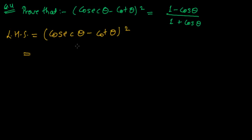Let me tell you a number one trick in this entire trigonometric identity chapter: convert all the other trigonometric values into sine and cosine form. Change cosec theta into sine, change cot into sine and cosine. Then solve. Every time, try to convert every other trigonometric function into sine and cosine.